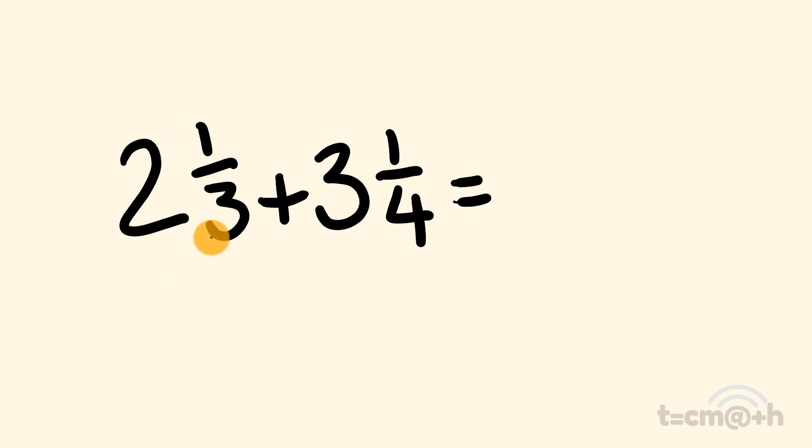First off, you'd have to turn your mixed numbers into improper fractions. Then you'd have to find common denominators for your fractions. Then you'd have to work out equivalent fractions. Based on those, you'd finally add and then you'd possibly do a bit of simplification.